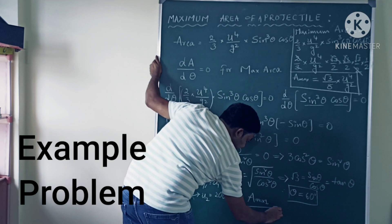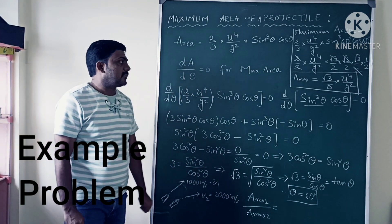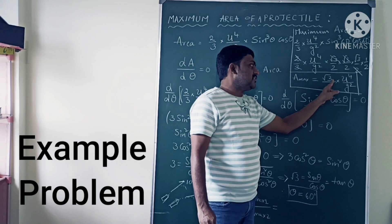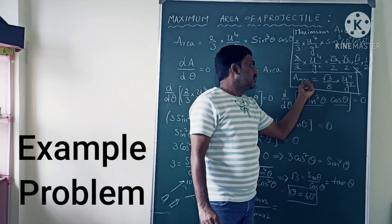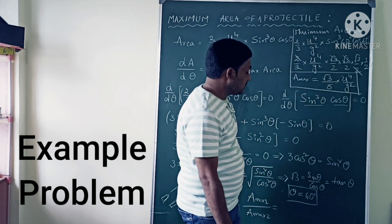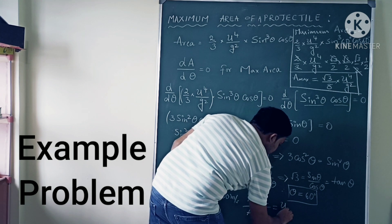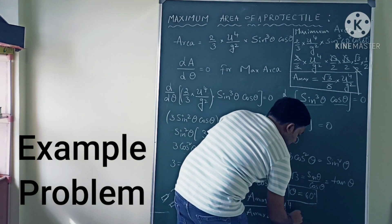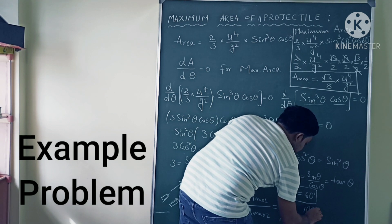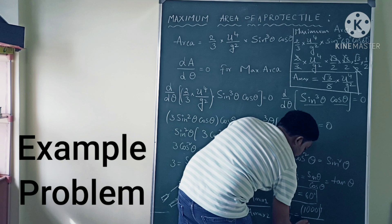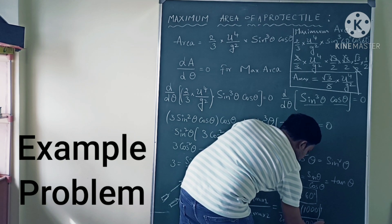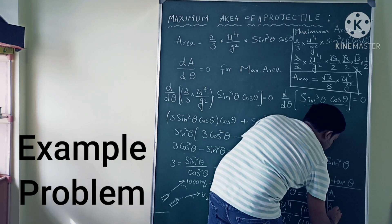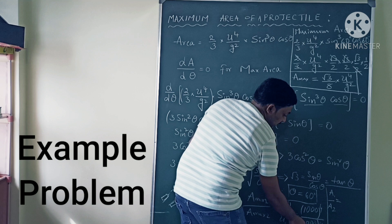Since only velocity is given, we use the relation between velocity and maximum area. In the maximum area formula, √3, 8, and g are all constants, so maximum area is directly proportional to u⁴. Therefore: A₁/A₂ = u₁⁴ / u₂⁴ = (1000)⁴ / (2000)⁴. Cancelling the zeros: this becomes 1⁴/2⁴ = 1/16.